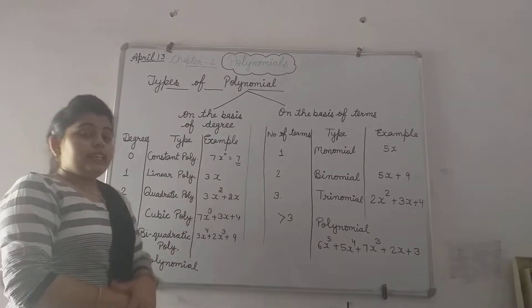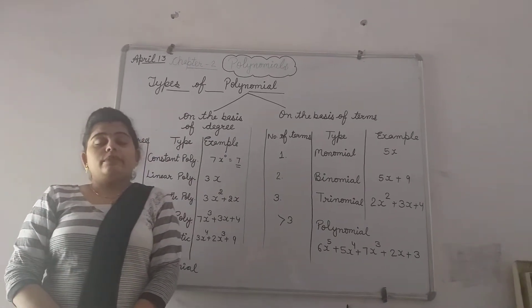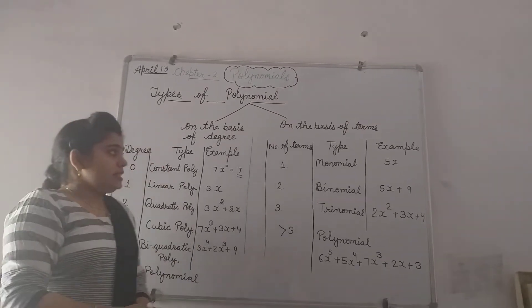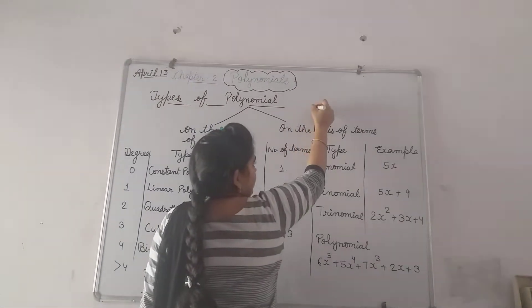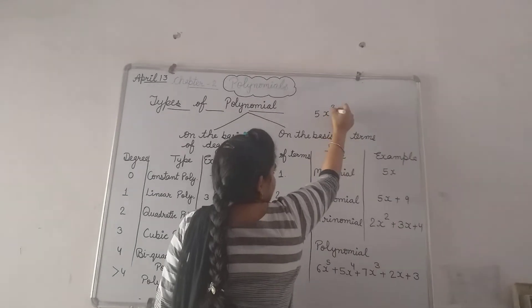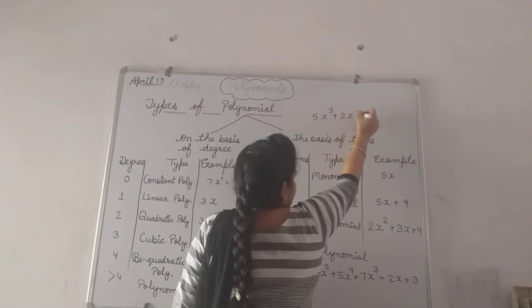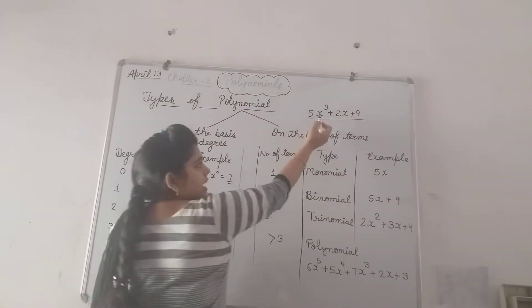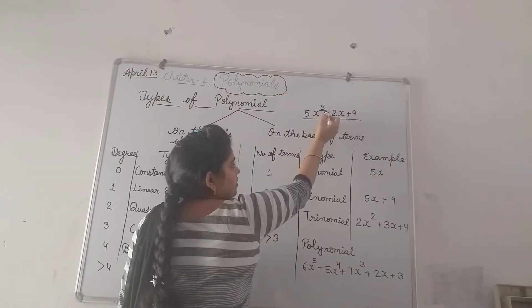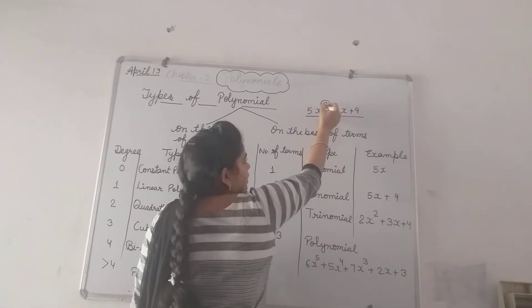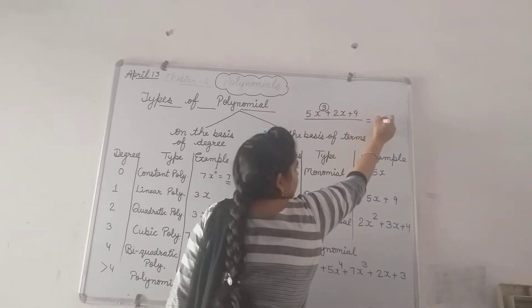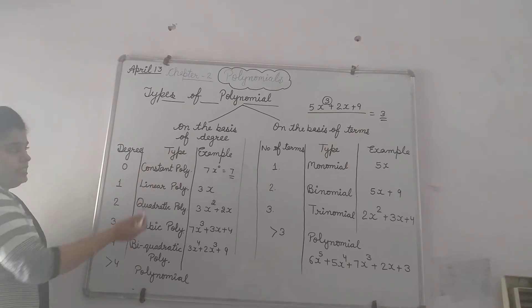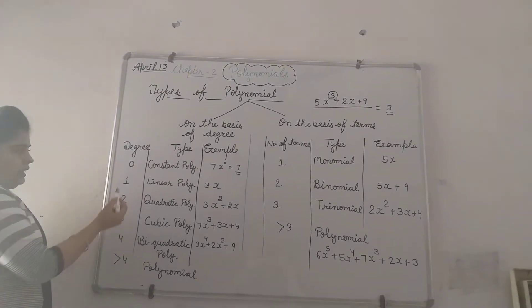Now what is degree? Degree in an algebraic expression is the highest power of variable. Suppose we are having this algebraic expression, the variable is x and highest power is 3, then its degree will be 3. So on the basis of degree we can categorize polynomial in different categories.